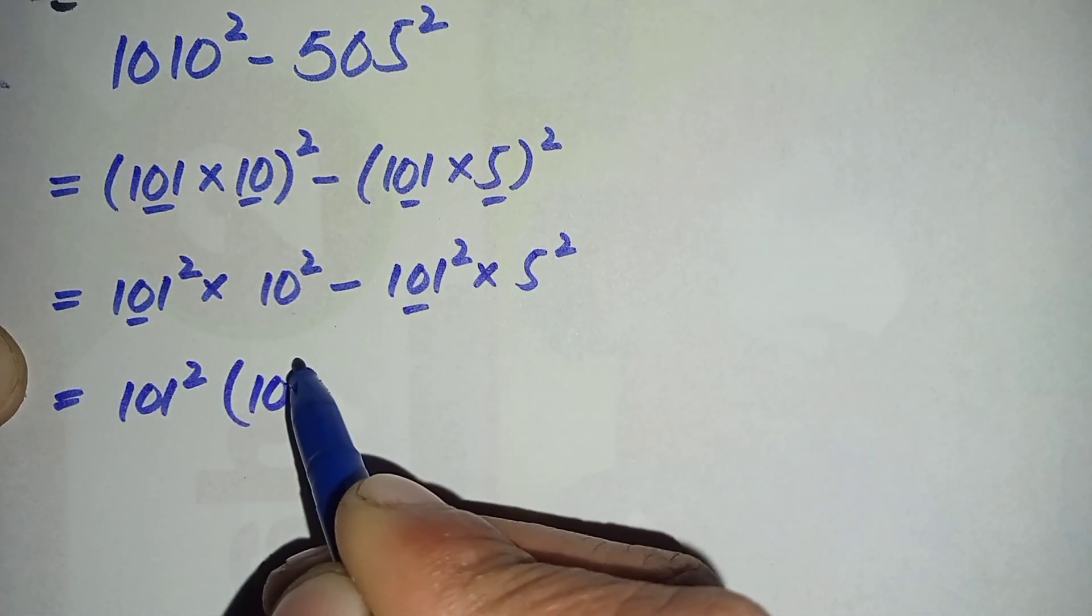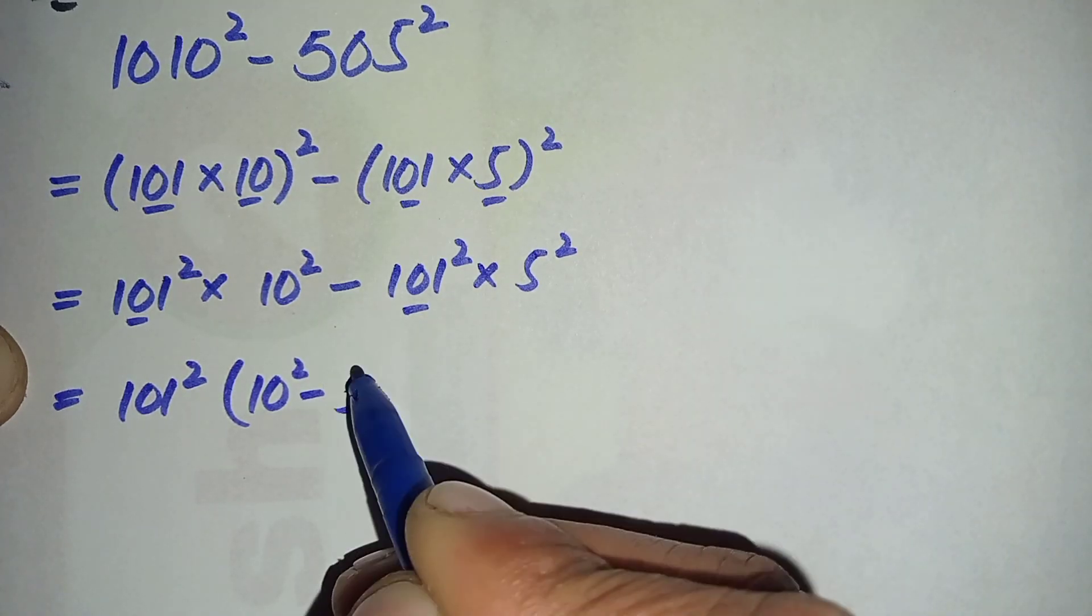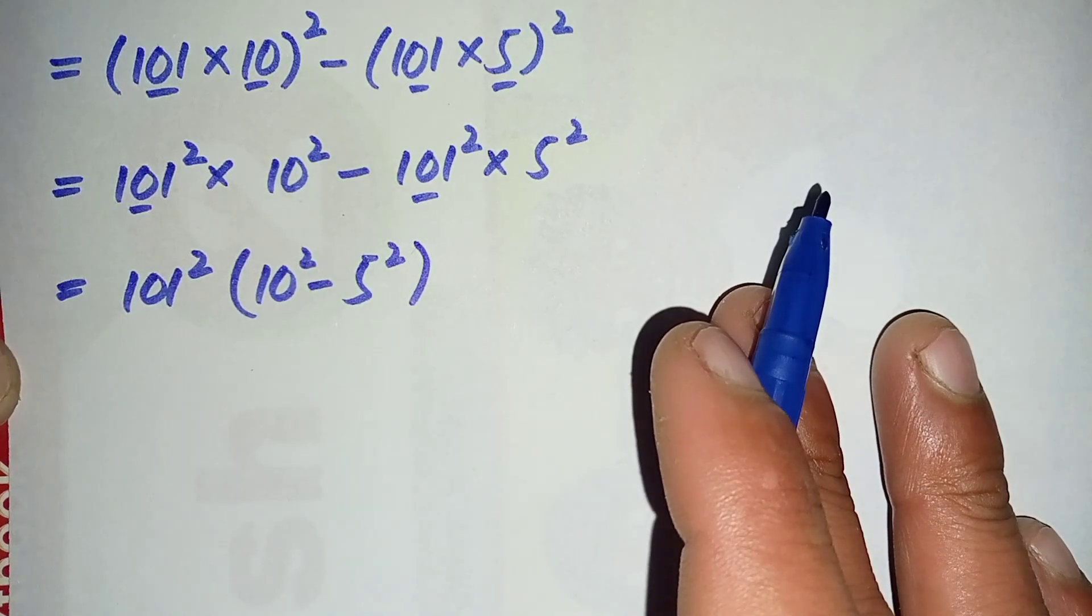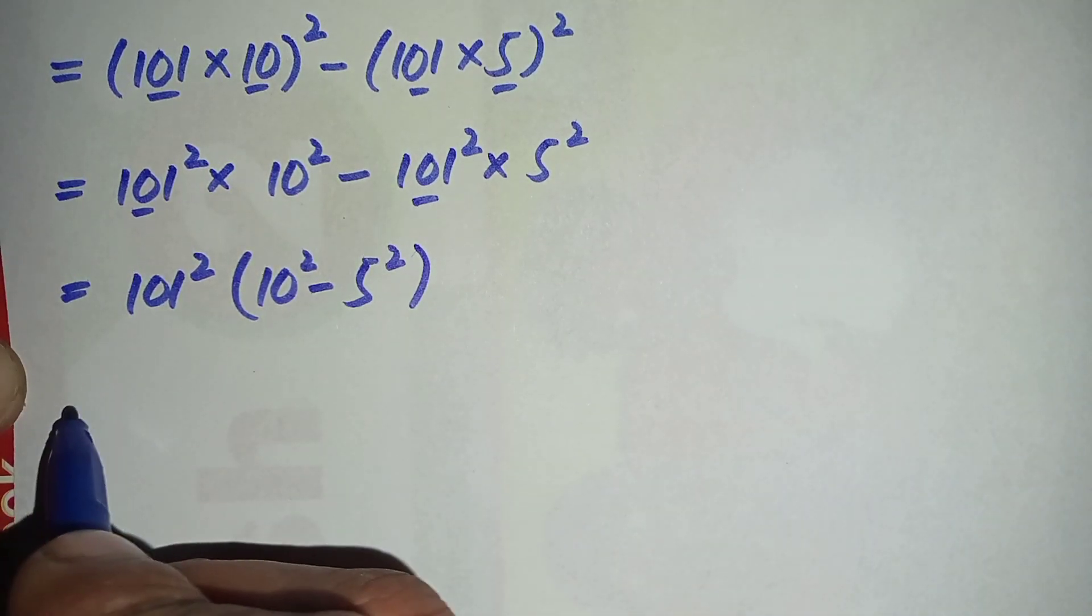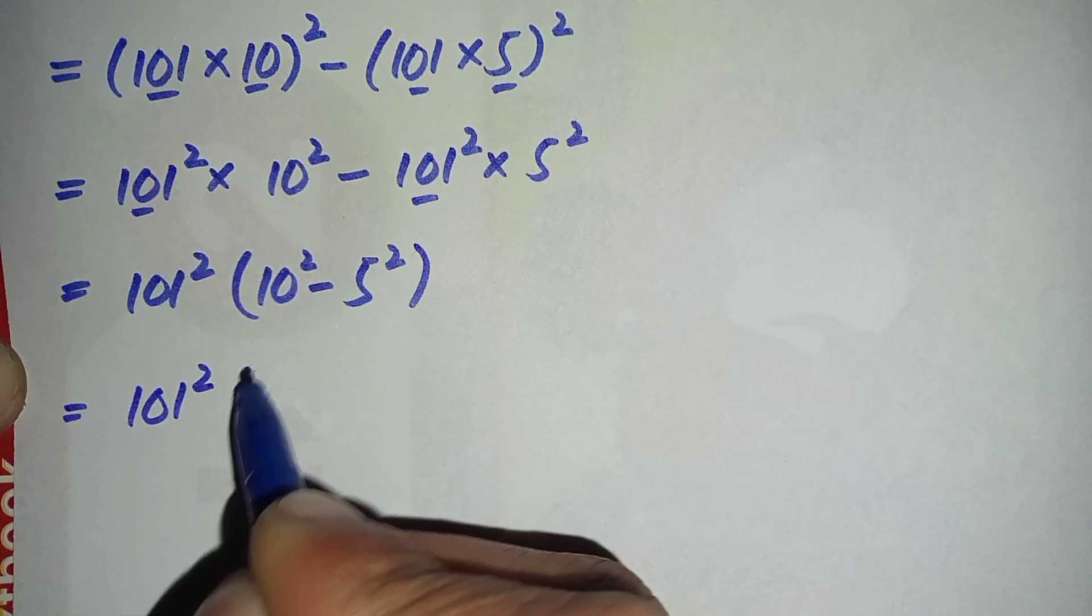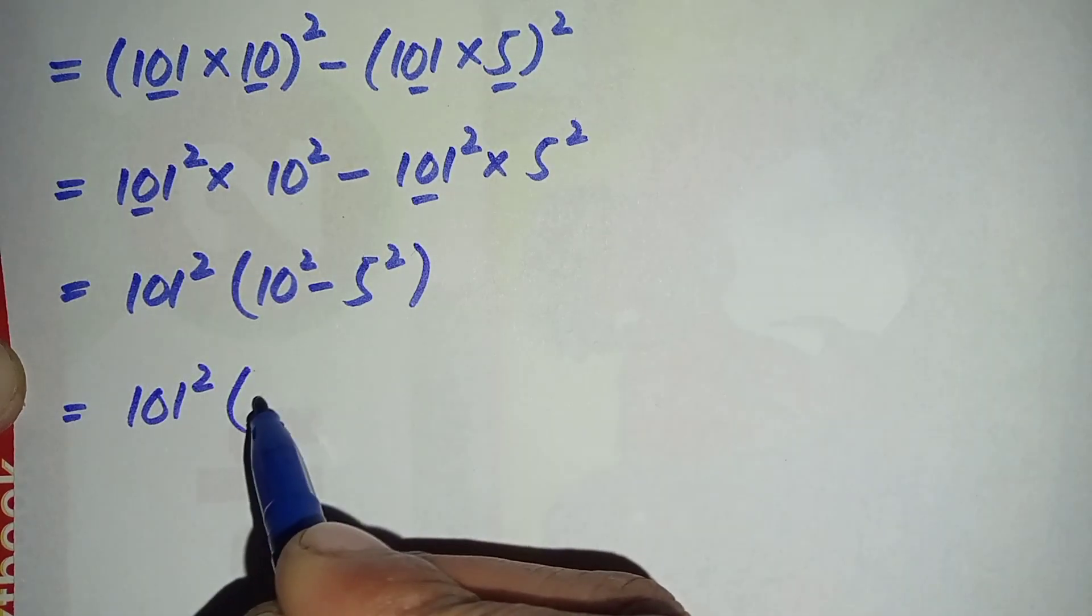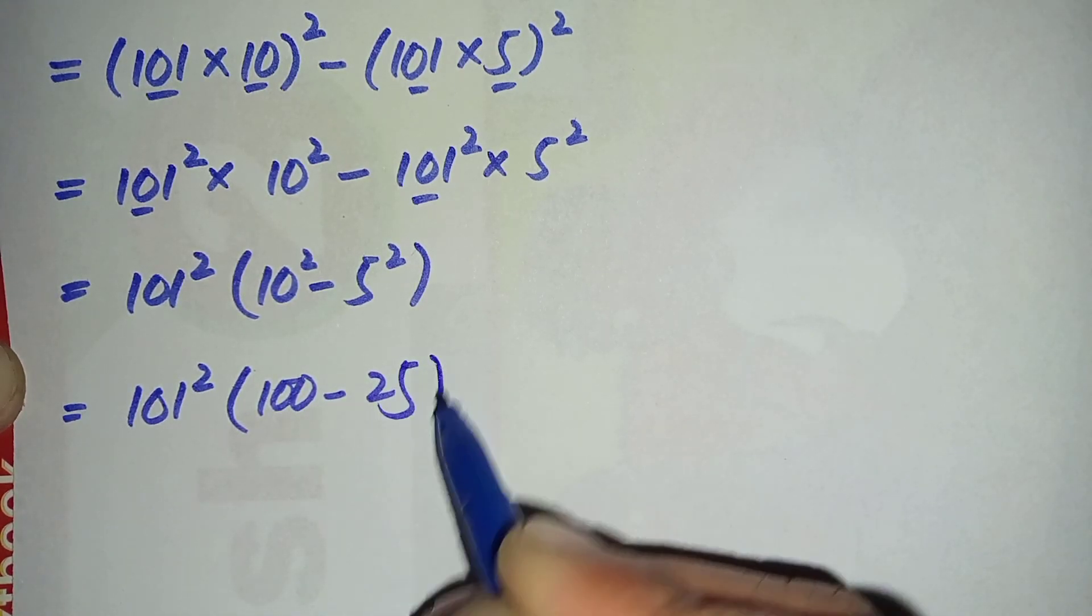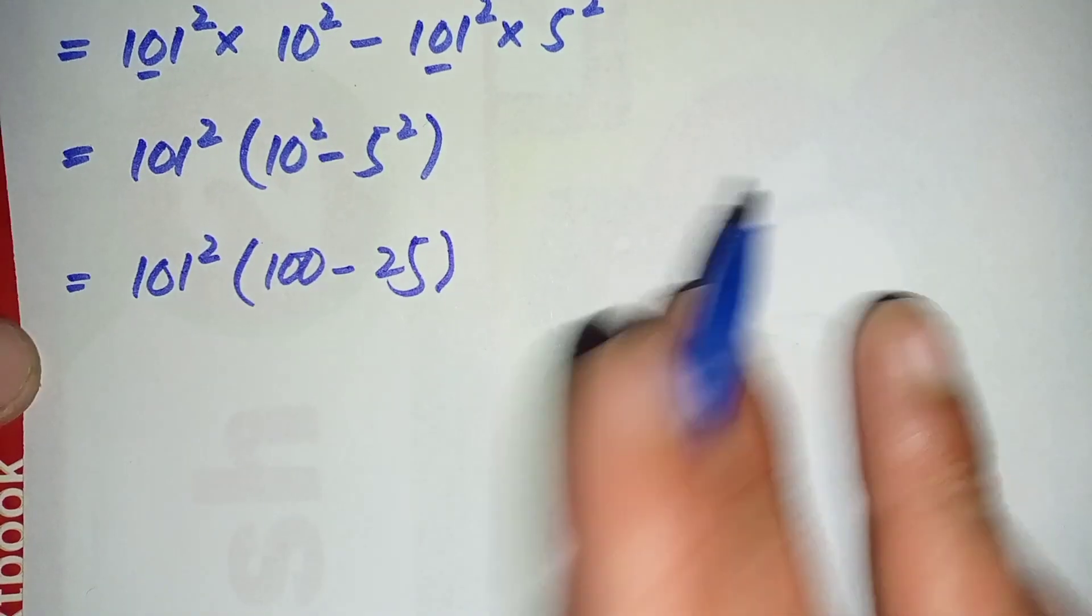Now further we can write this equation as 101² times 10² is 100 minus and 5² is 25.